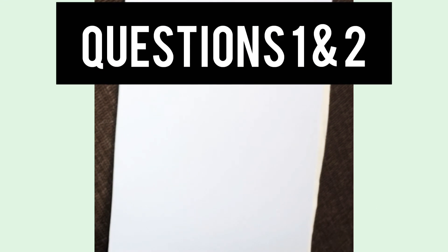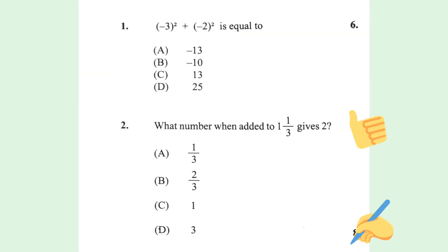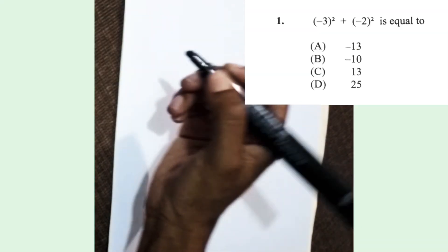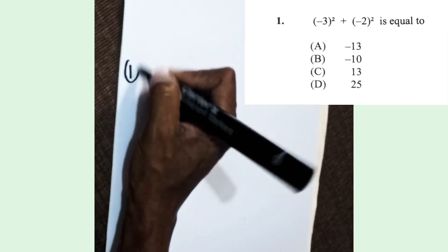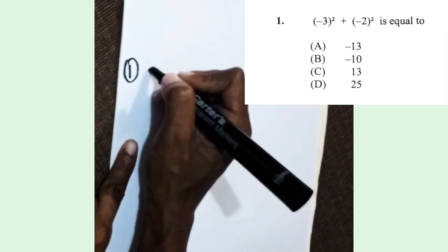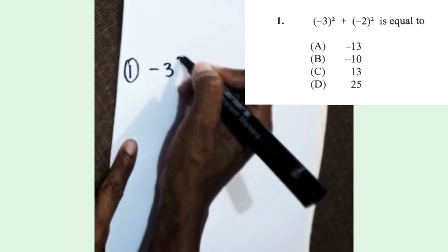All right guys, before we jump into the algebra questions, let us look at the first two questions. Question one: negative three squared plus negative two squared.